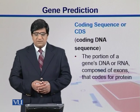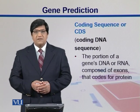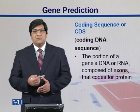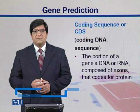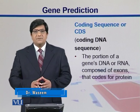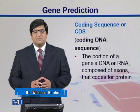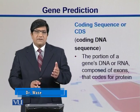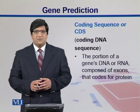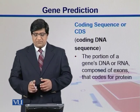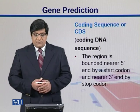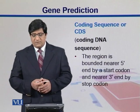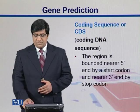What is a coding sequence? The portion of a gene's DNA or RNA that is composed of exons and that codes for proteins. Exons put together make up the coding sequence. Normally the coding sequence starts with the start codon ATG and it ends with one of the three stop codons. This region is bounded near the 5' end by the start codon and the 3' end by the stop codon.